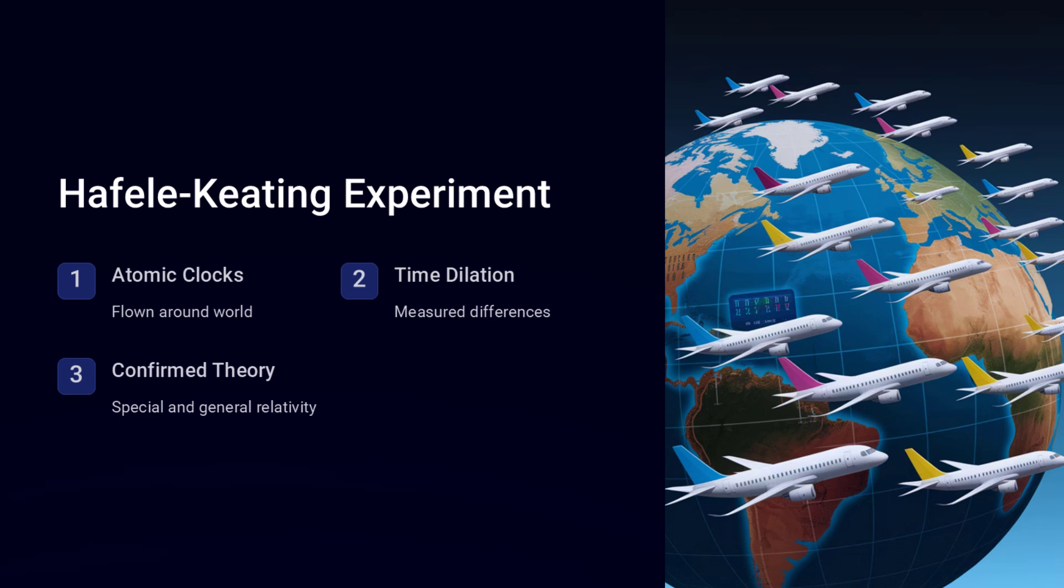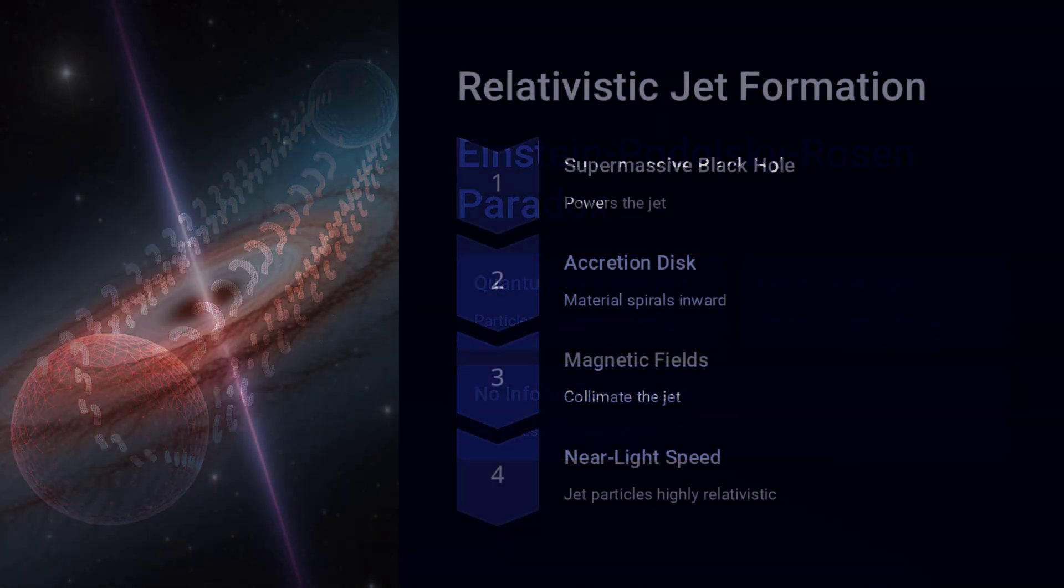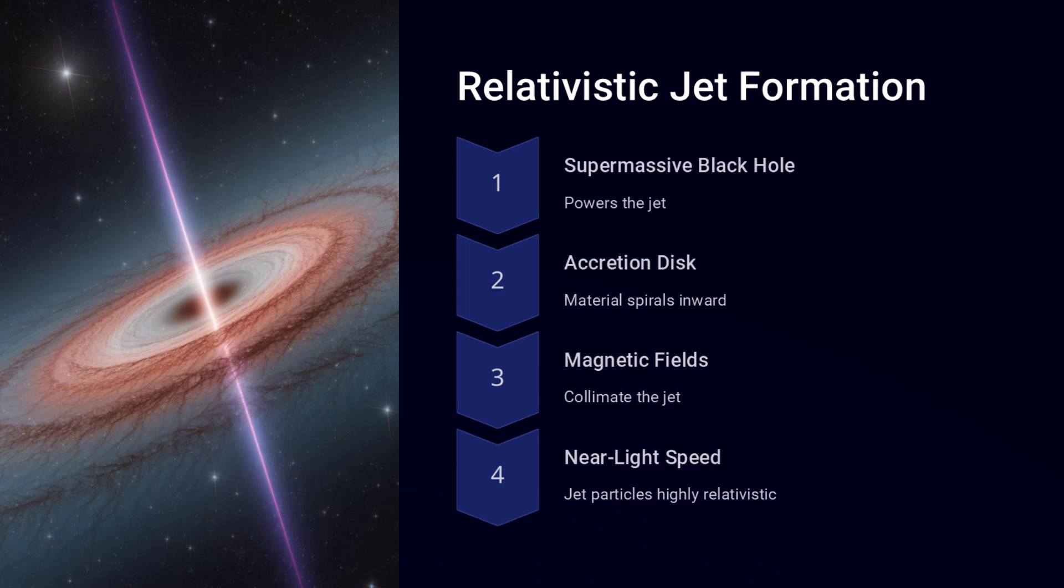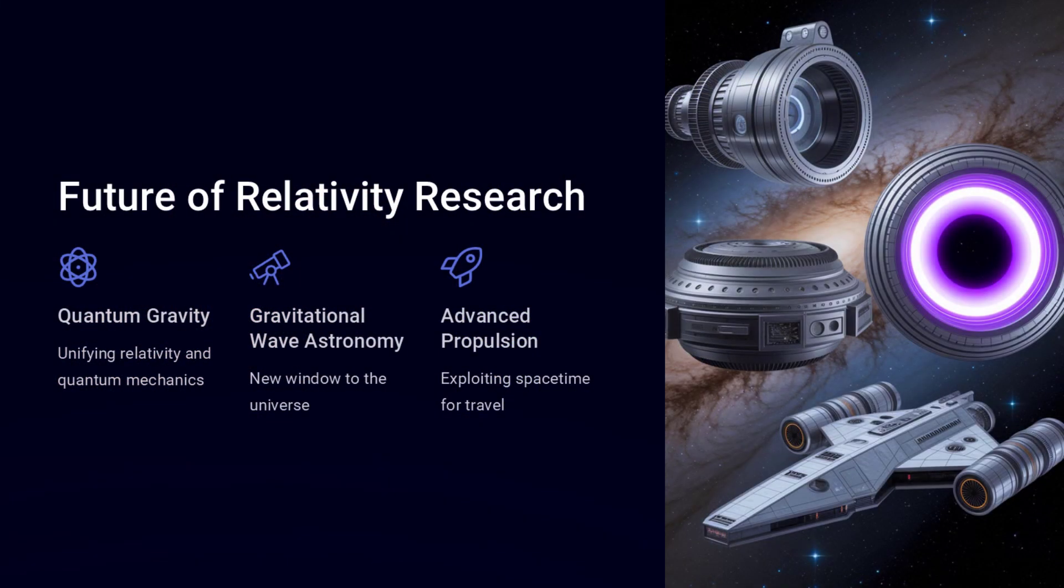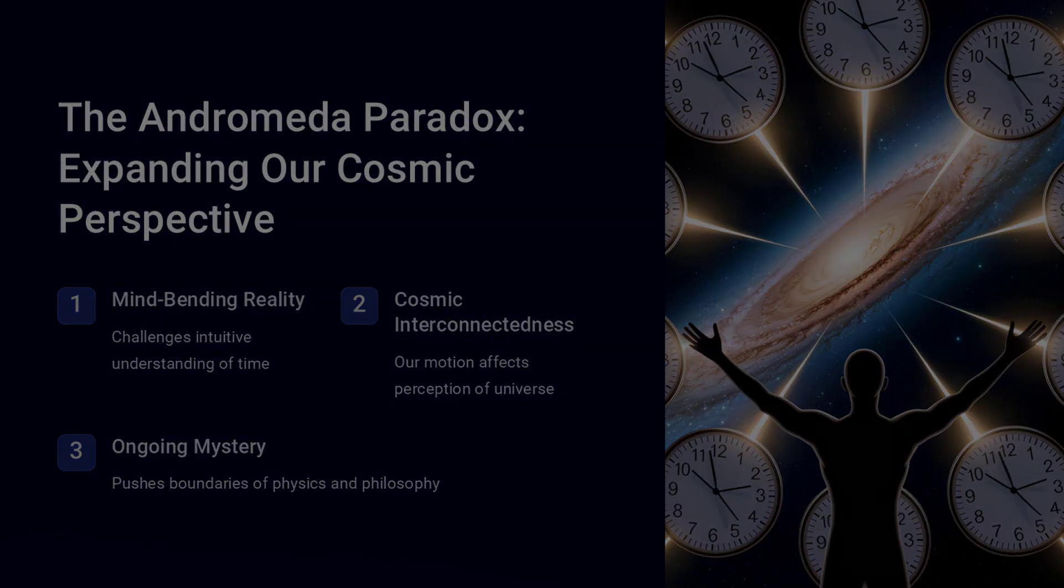But this idea leads to even deeper questions. If every motion creates a different version of 'now' across the universe, does an objective present even exist? If so, where? And could our own movement be subtly shifting the way we experience cosmic events without us even realizing it?